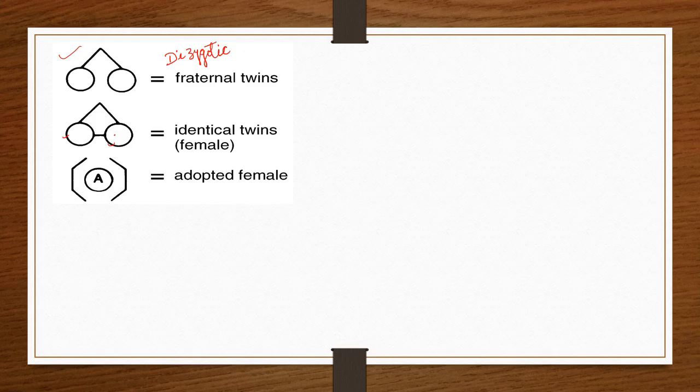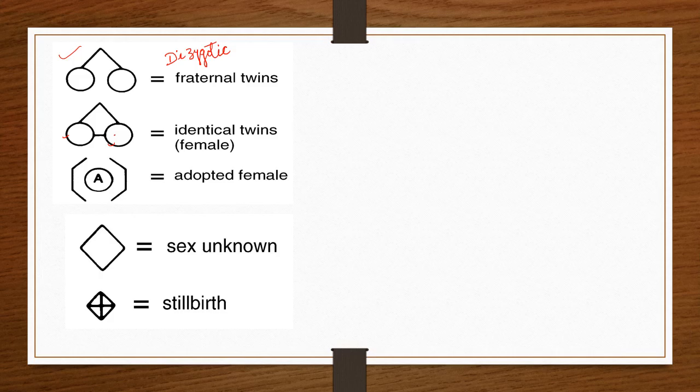For sex unknown — such as an unborn child being studied — a specific symbol is used since it is unknown whether the individual will be male or female.